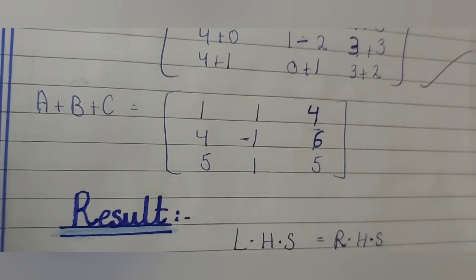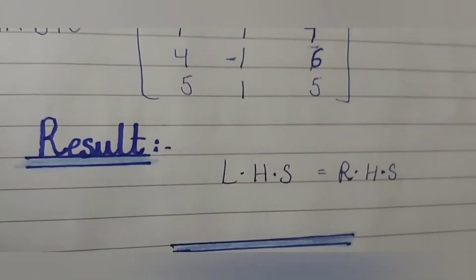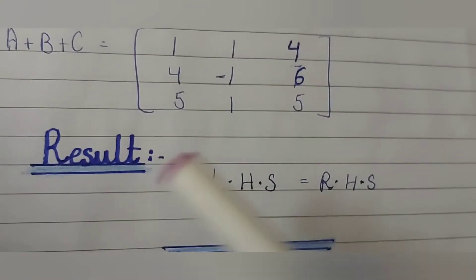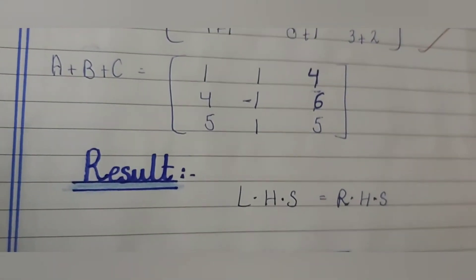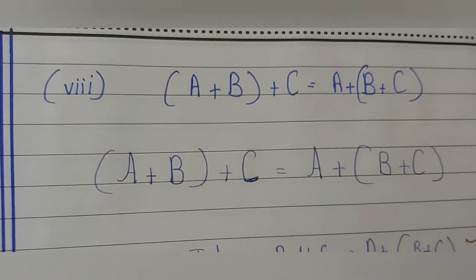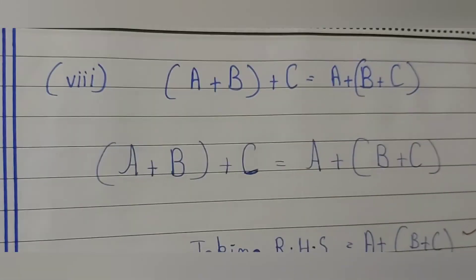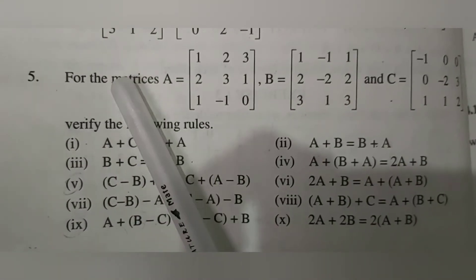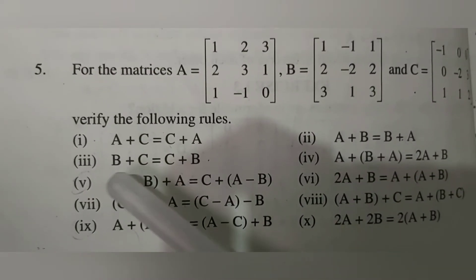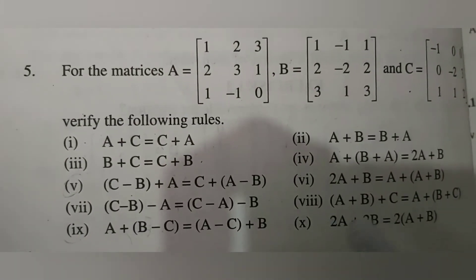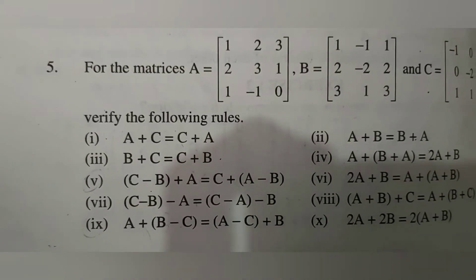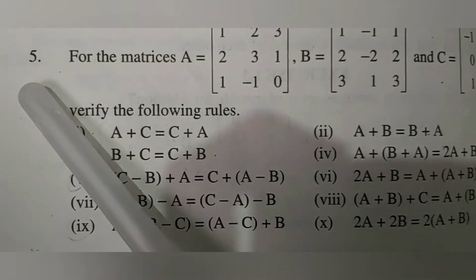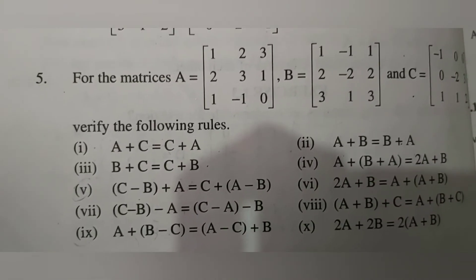Both values and all entries are equal, so left hand side is equal to right hand side. This was our question number 8. Hope you understand Exercise 1.3 question number 5 parts 7 and 8. In my next video we will do the remaining parts of question number 5. Thank you, Allah Hafiz.